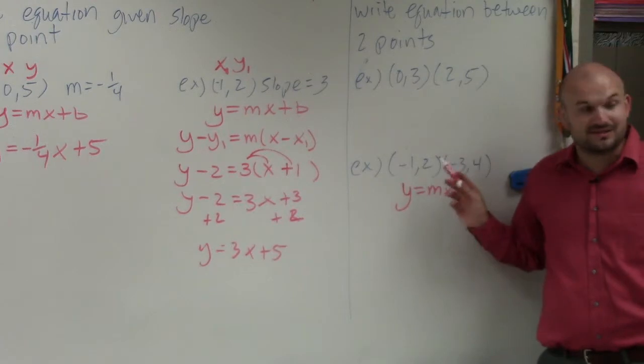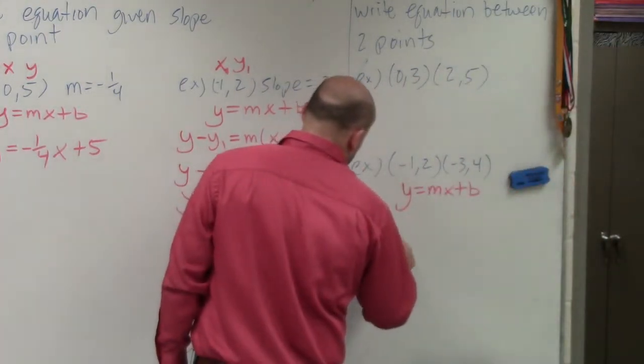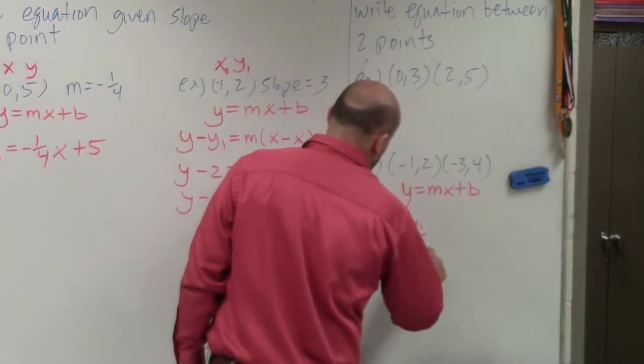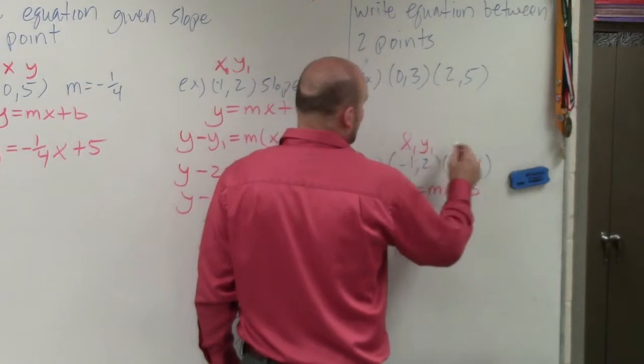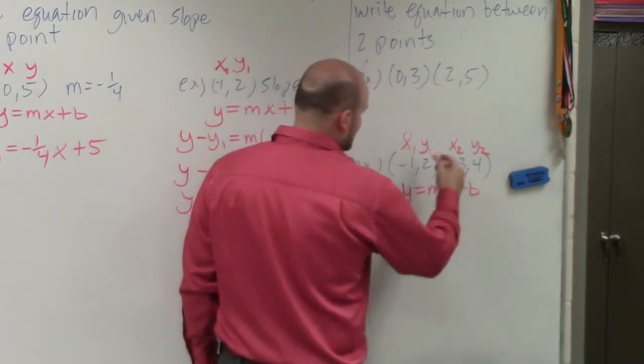Between given two points, can we find the slope? Yes. We know the slope formula, right? m equals y2 minus y1 over x2 minus x1. So we can just label this as x1, y1, x2, y2.